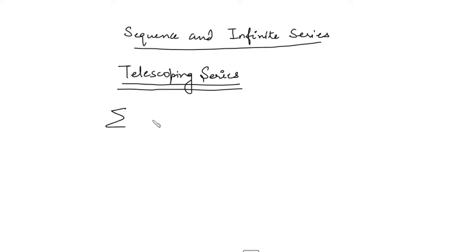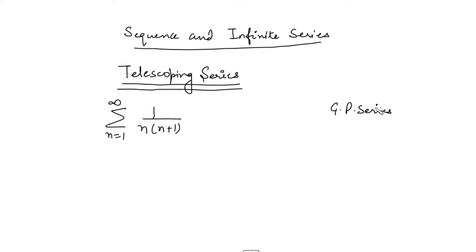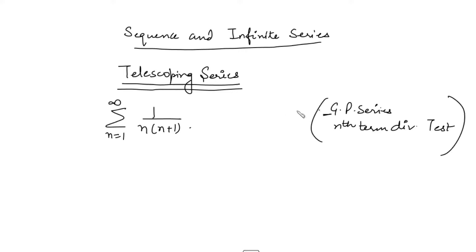Suppose you are given a series of the form 1 over n(n+1) where n varies from 1 to infinity. We have to check the behavior of this series. We've previously done the GP series test and the nth term divergent test. This is not a GP series — it's not of the form summation a·r^(n-1) — so we cannot apply the GP series test.